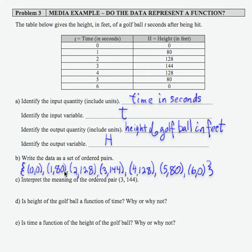For Part B, I want to write the data as a set of ordered pairs. So I've written together the input and output on each row, and then put these set brackets around that entire group of ordered pairs.